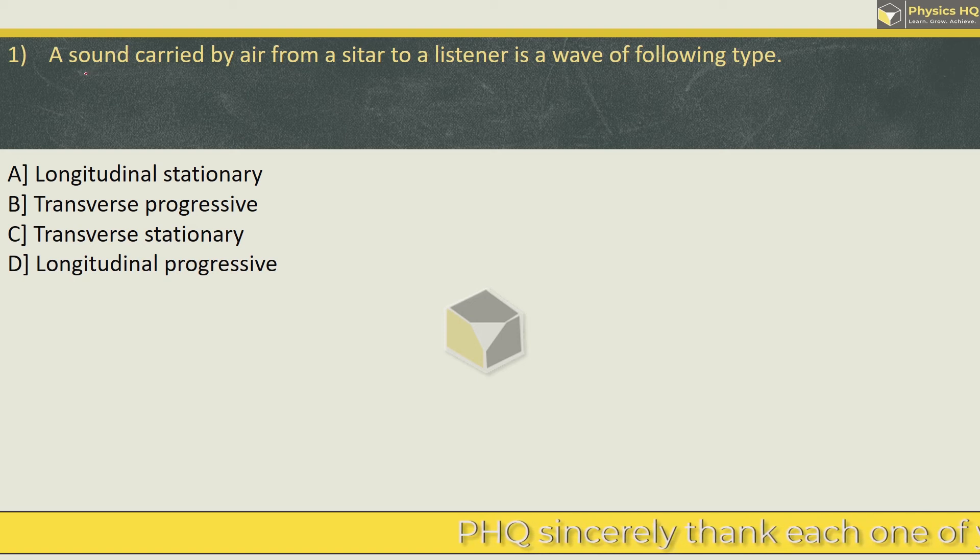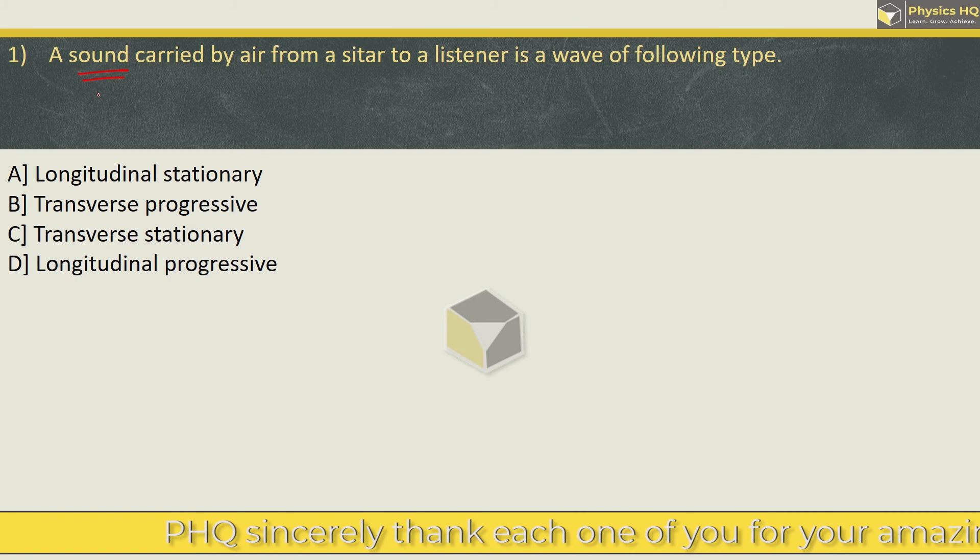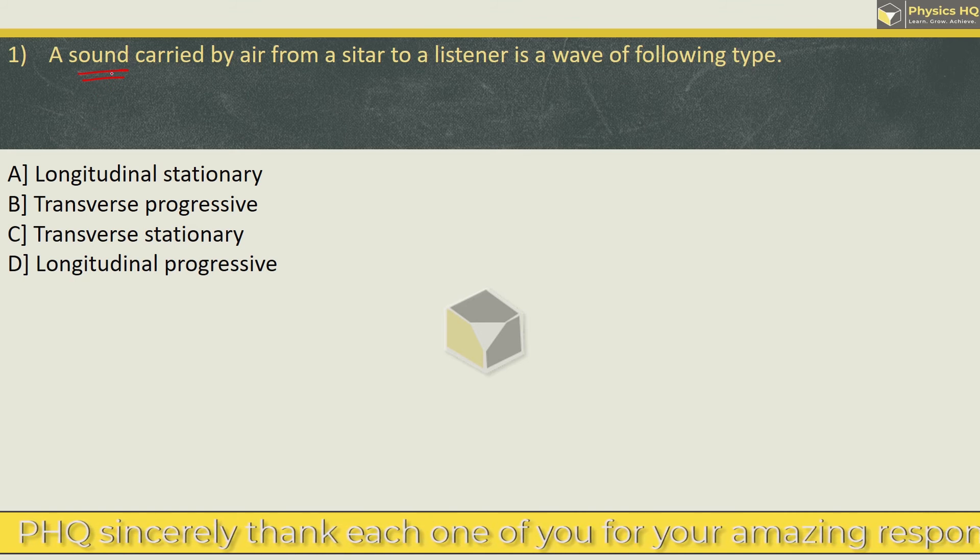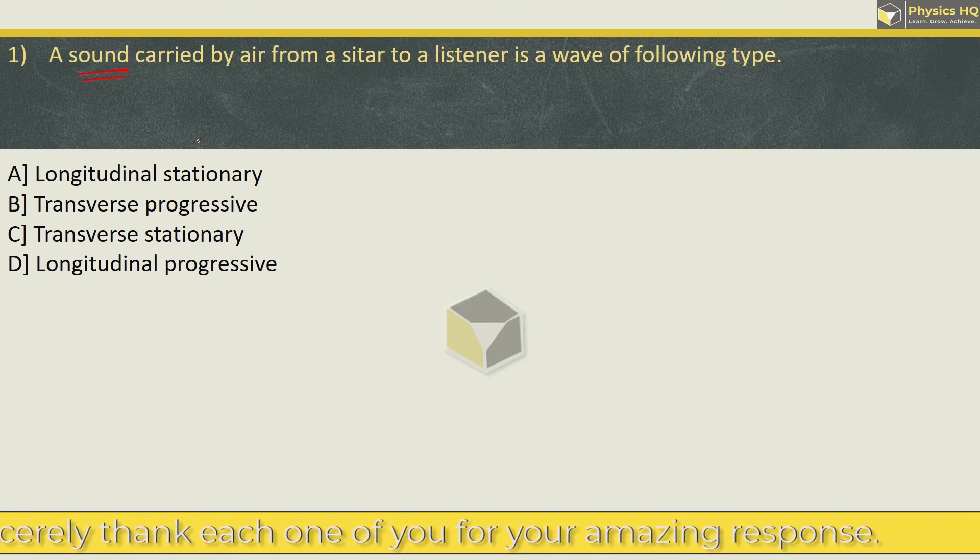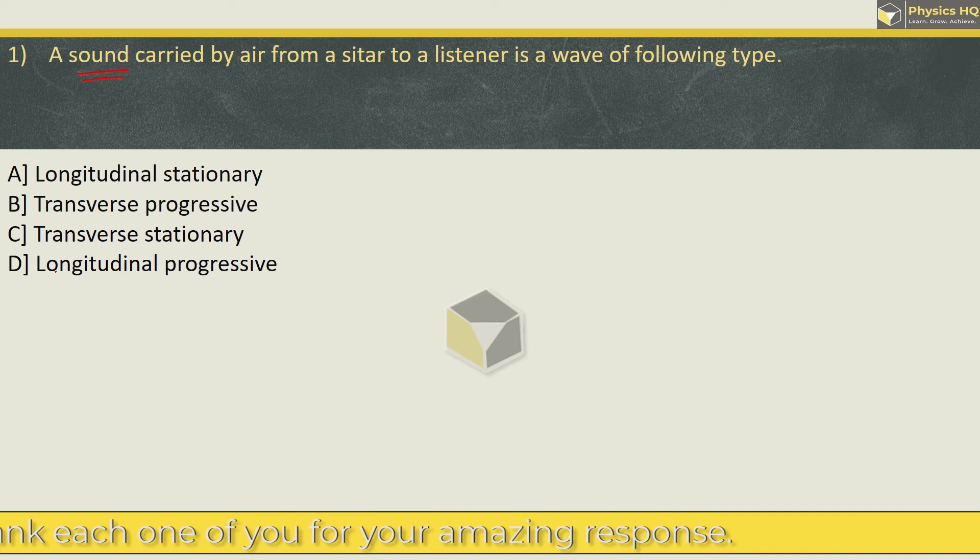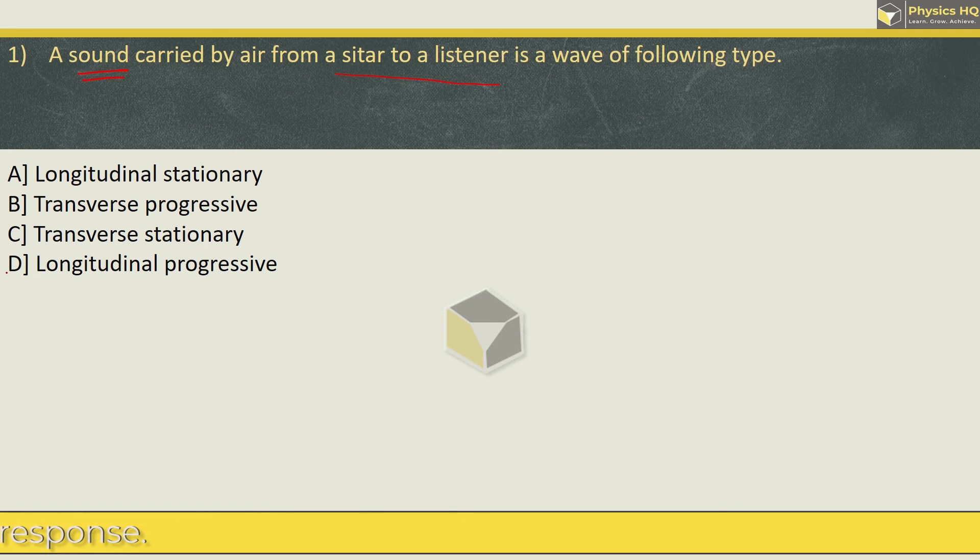Now as soon as people have said that there are sound waves, you should click that sound waves are always longitudinal waves. Sound waves are longitudinal waves in air. So option A and D. Second thing, sound waves are travelling from sitar to the listener. For this, the correct option is option D, Longitudinal Progressive wave. I hope you have understood it.